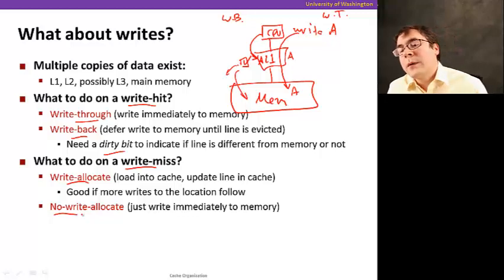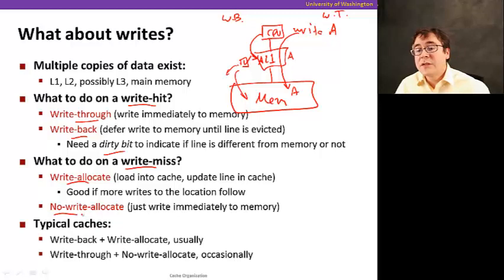Another way that write allocate is useful too is if you do a write that's later going to do a read, that's a good thing because it's likely to be in the cache. So typical caches are either write back with write allocate. Usually, that's a common case. Although, write through and no write allocate occasionally you see that, especially in some machines that have multiple processors.